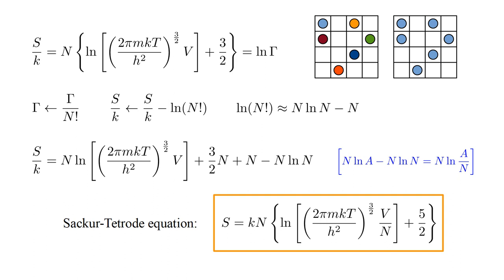So far, we have used the ideas of statistical mechanics to derive the Sackur-Tetrode equation for the entropy of a monatomic gas of n atoms in a volume V at a temperature T. This is S equals k n times the quantity log of two pi m k T over h squared to the three-halves times V over n plus five-halves. Here k is Boltzmann's constant and m is the atomic mass.